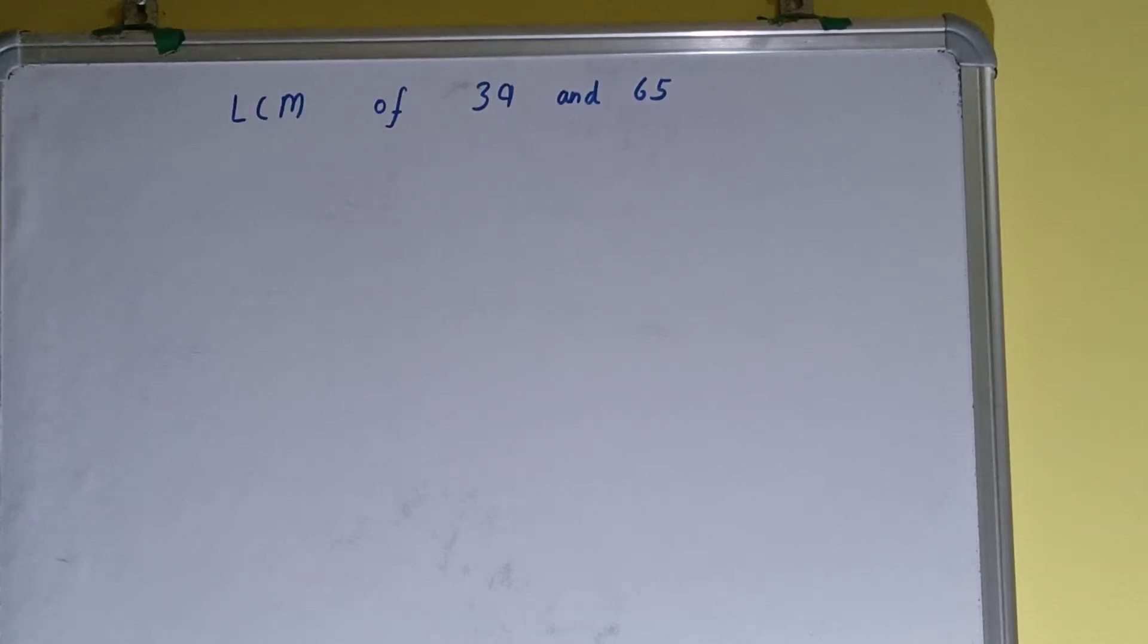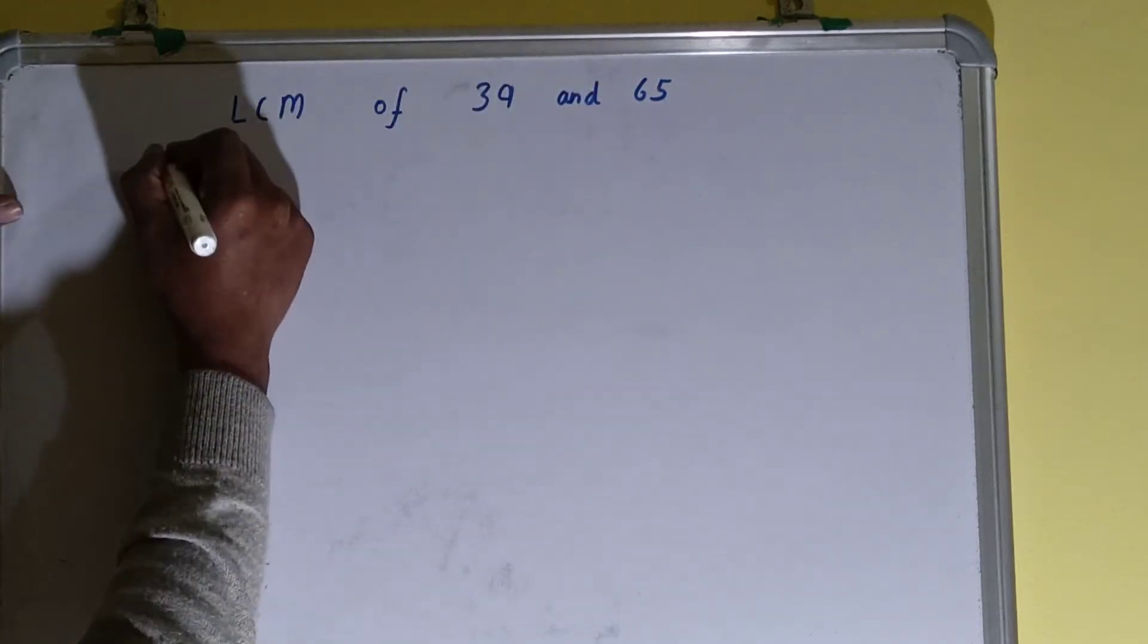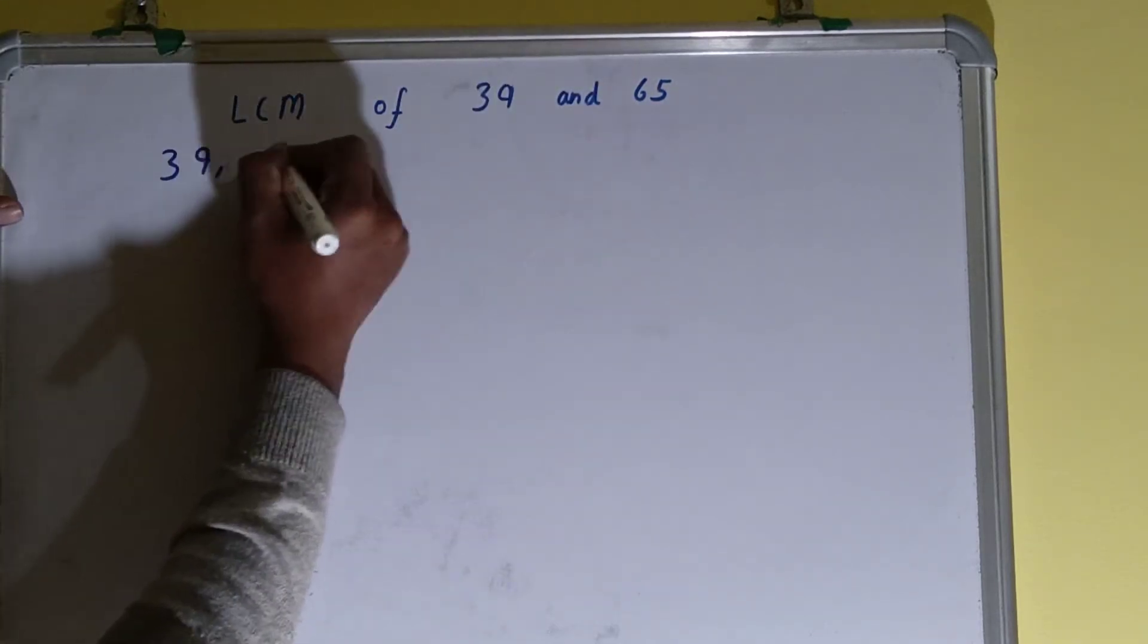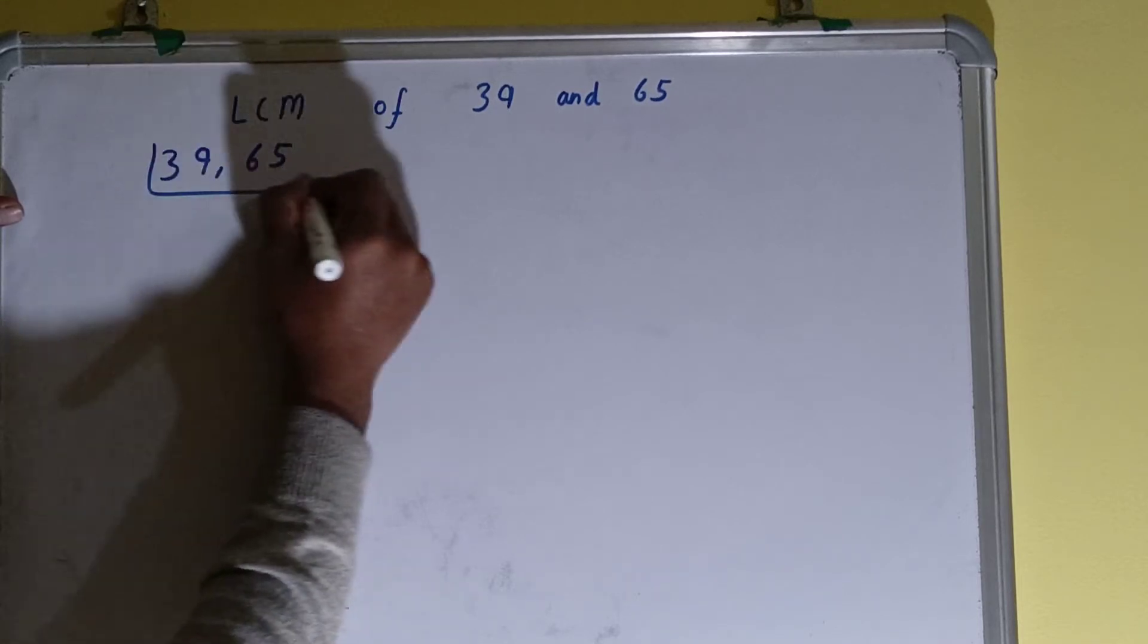Hello friends, and in this video I'll be helping with the LCM of the numbers 39 and 65. To find it out, we first need to write both the numbers like this: 39 comma 65.